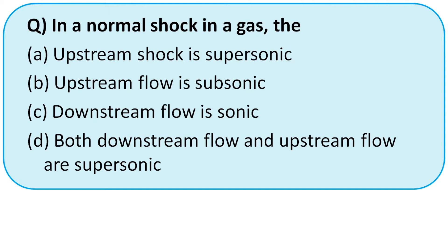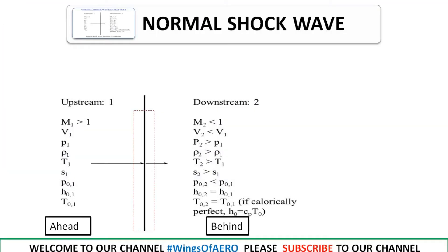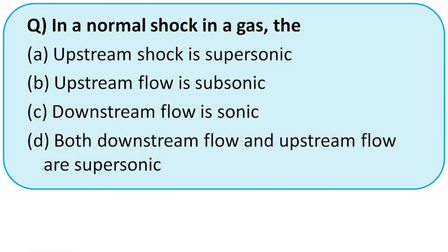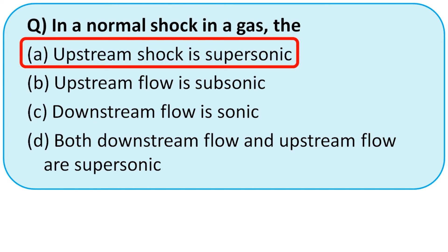In a normal shock wave in a gas — upstream flow is supersonic and downstream flow is subsonic, upstream flow is subsonic, downstream flow is sonic, or both are supersonic? From the diagram of a normal shock wave, it can occur only in supersonic flow, where the upstream Mach number is always greater than 1. So the right option is option A — upstream flow is always supersonic.